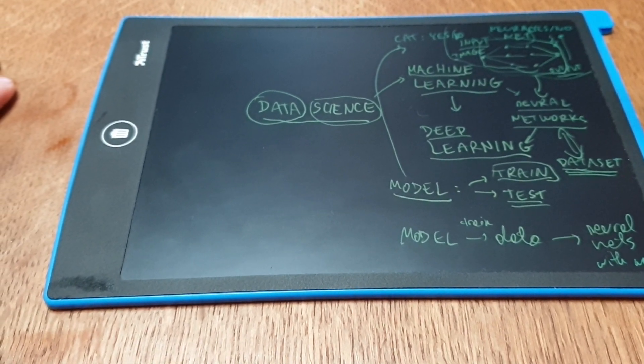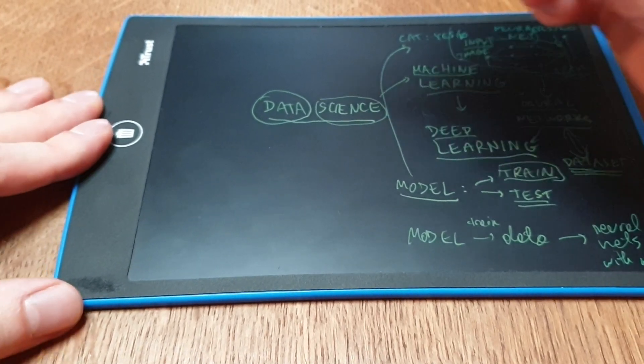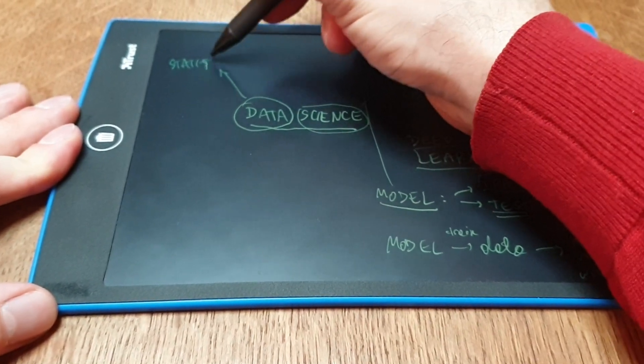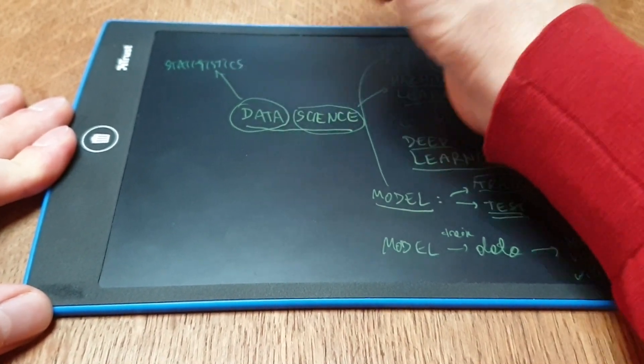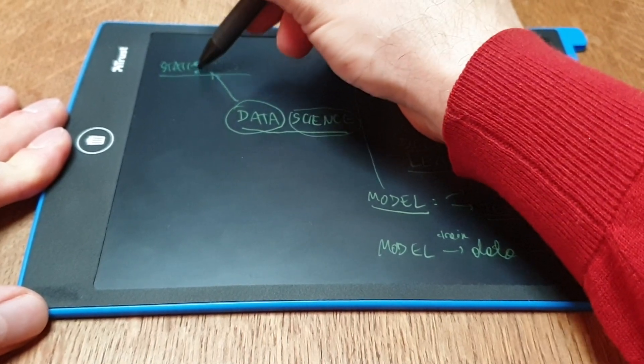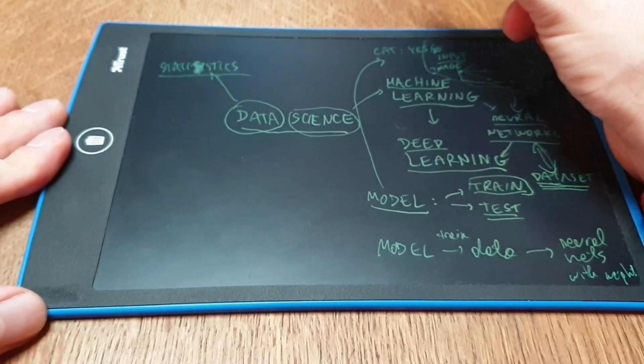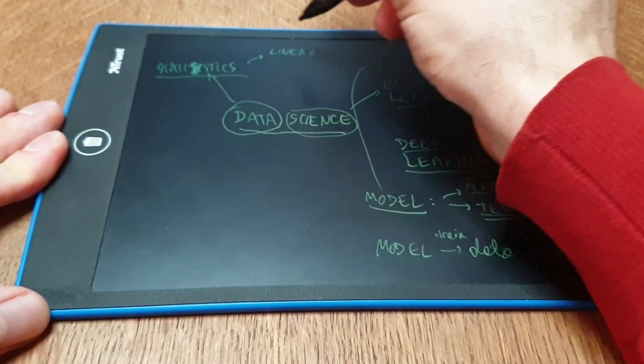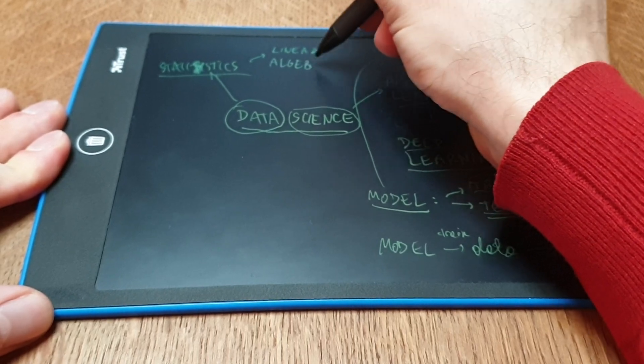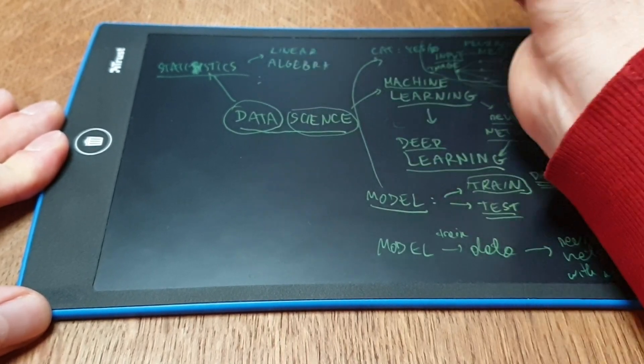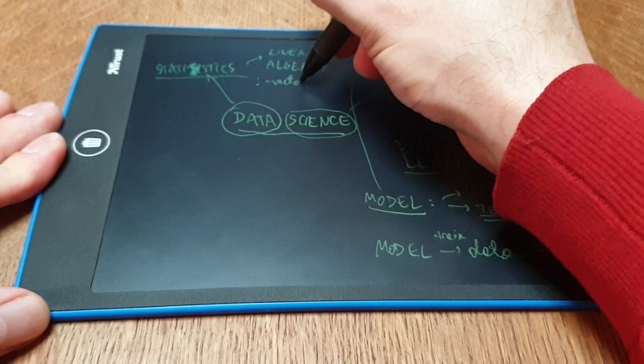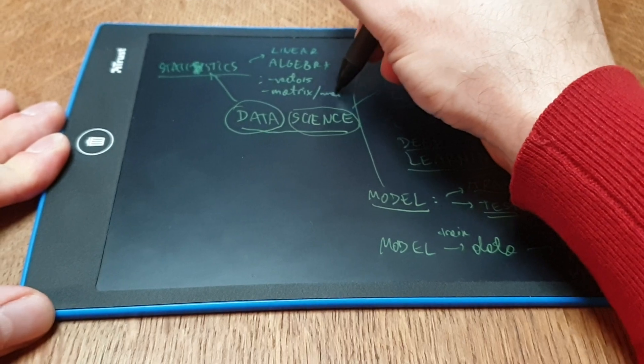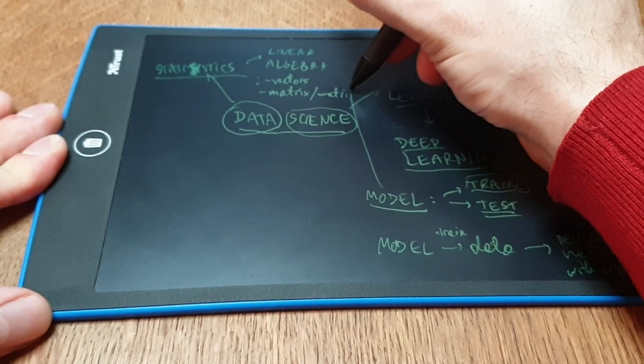And then you have a couple of terms which also appear in data science, more on the statistics side. So we have the whole term of statistics. And first of all, you have linear algebra. So what's going into linear algebra is vectors, matrix, matrices in plural.